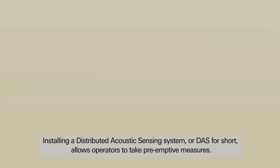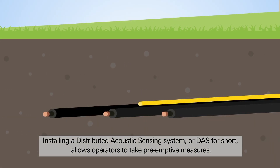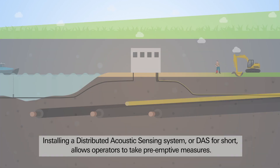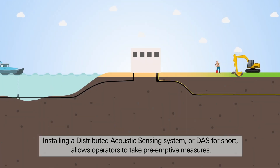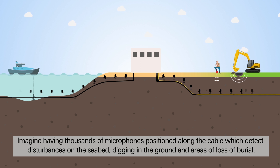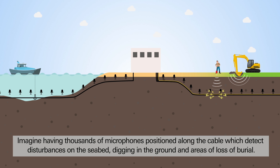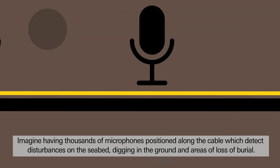Installing a distributed acoustic sensing system, or DAS for short, allows operators to take pre-emptive measures. Imagine having thousands of microphones positioned along the cable, which detect disturbances on the seabed, digging in the ground, and areas of loss of burial.